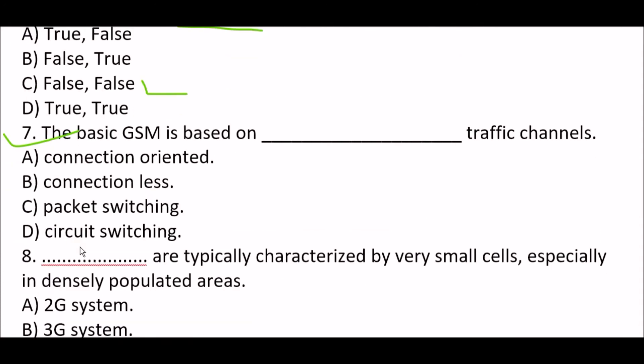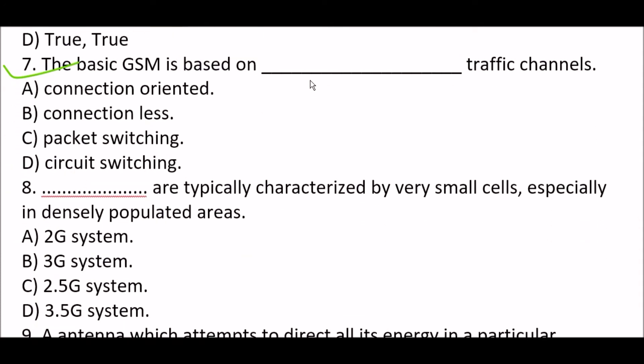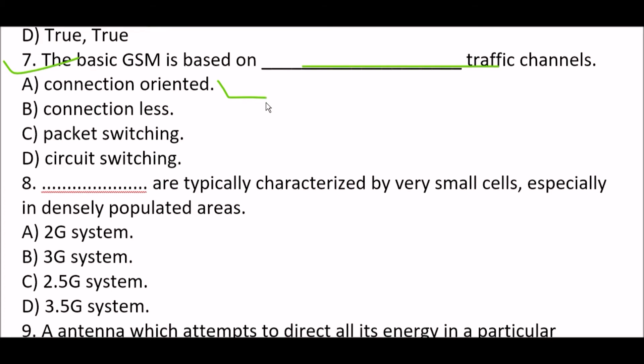Next question: The basic GSM is based on blank traffic channels. Option A: connection oriented. Option B: connectionless. Option C: packet switching. Option D: circuit switching. The right answer is Option A, connection oriented. The basic GSM is based on connection-oriented traffic channels.